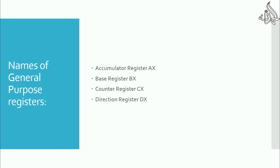Next, the base register can be used as a temporary variable. The counter register is used for loops, and you can also use it as a temporary variable to store a value and then move it to a variable. The direction register DX is used to display a string on screen, and it can also be used as a temporary variable.